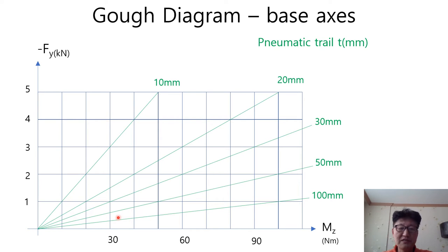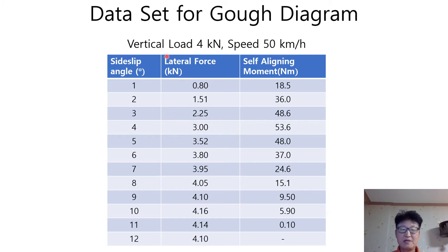Now we are all set to draw the GO diagram. For example, let's assume we have a data set of side-slip angle, lateral force, and the self-aligning moment in a tire normal force 4 kN at the speed 50 km per hour for radial tire as shown in the table.